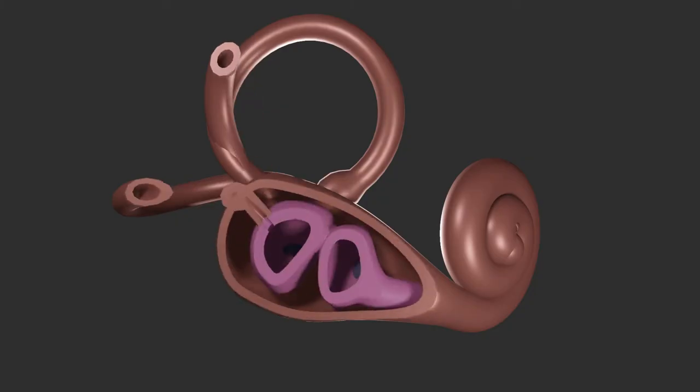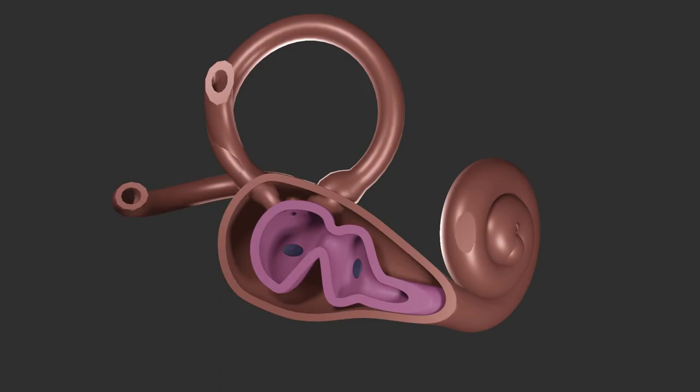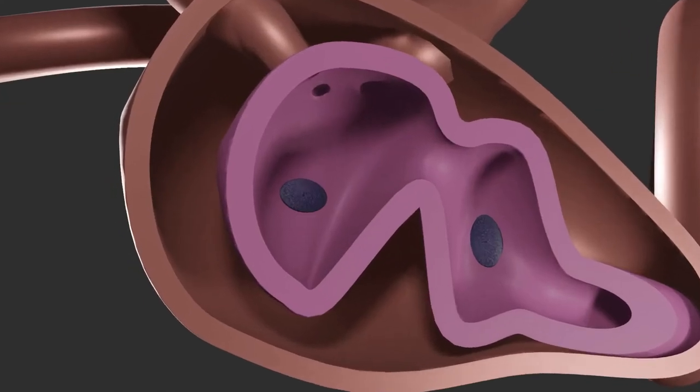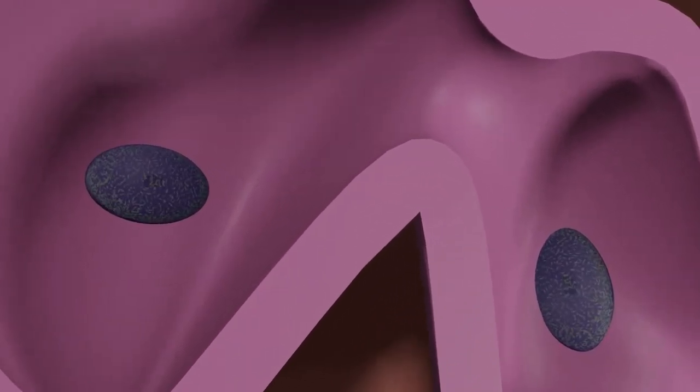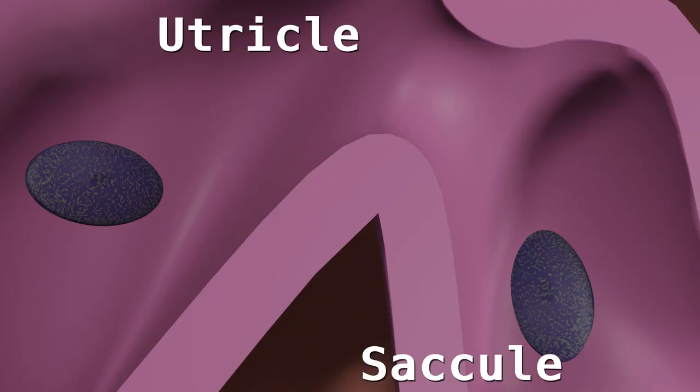Sectioning of the vestibule reveals two fluid-filled sacs that communicate with the semicircular canals and the cochlea. The superior sac is the utricle and the lower sac is the saccule. Each contains thickening on their wall that holds two sensory structures known as macula. The macula is approximately 2 square millimeters each. The two maculae are at approximate right angles.